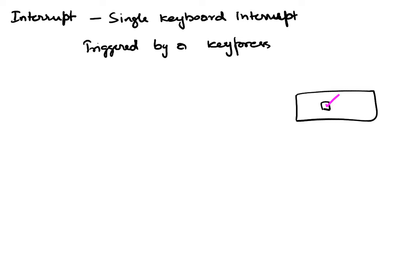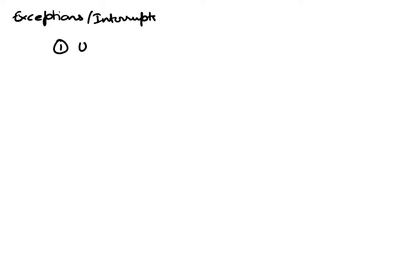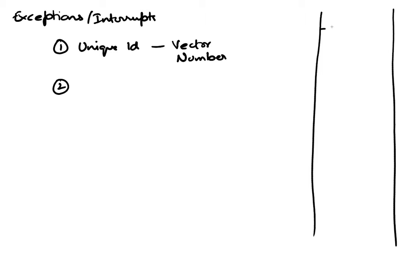What is common to both exceptions and interrupts is that all exceptions and interrupts have a unique identity called the vector number. The vector number is used to access the interrupt vector table. Whatever the vector number is — I'll call it VN — VN is used as an index into the interrupt vector table.